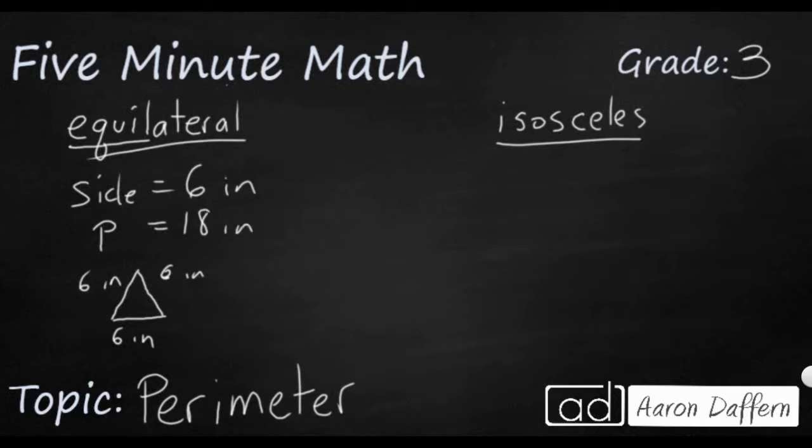They might say an isosceles triangle, two sides are going to be five meters each, and then they might give you the perimeter of 14 meters. So they've given you two sides of the triangle and the perimeter, but now they're looking for the missing side. How in the world can you figure this out?